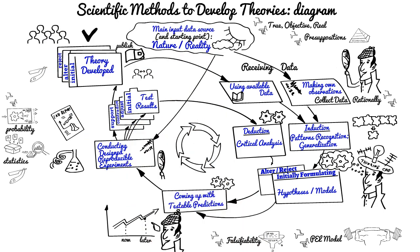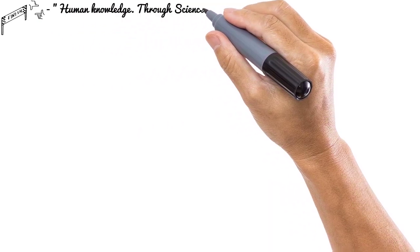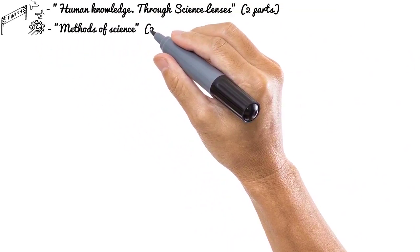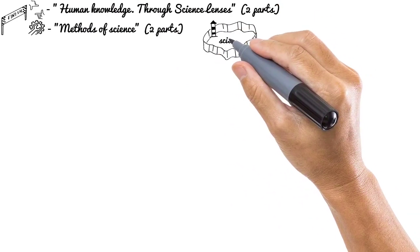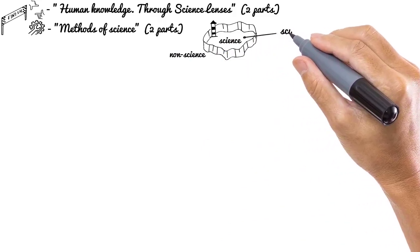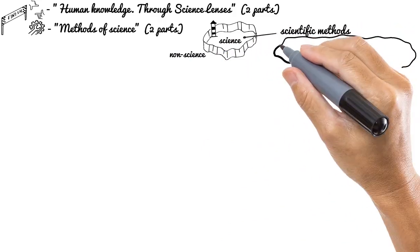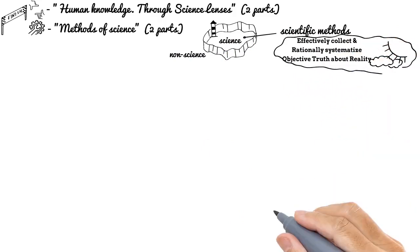We just fully finished discussing terms from Through Science Lenses two videos and scientific instruments in Methods of Science two videos. We discussed science borders like no theology and no metaphysics. Within those borders, scientific methods claim to be very effective to collect and rationally systematize objective truth about reality. Before finishing this video, we need to mention that scientific approach is not the only approach of forming human knowledge.